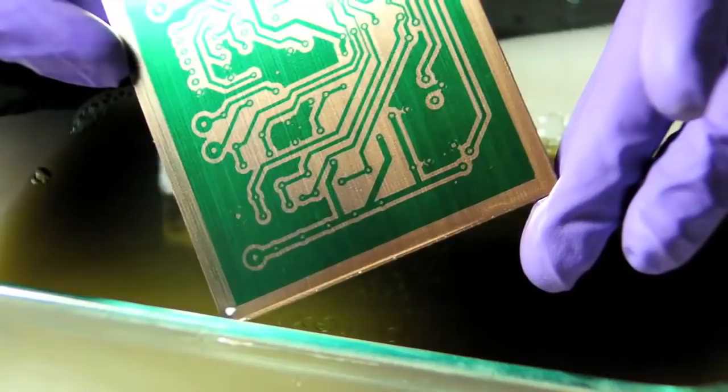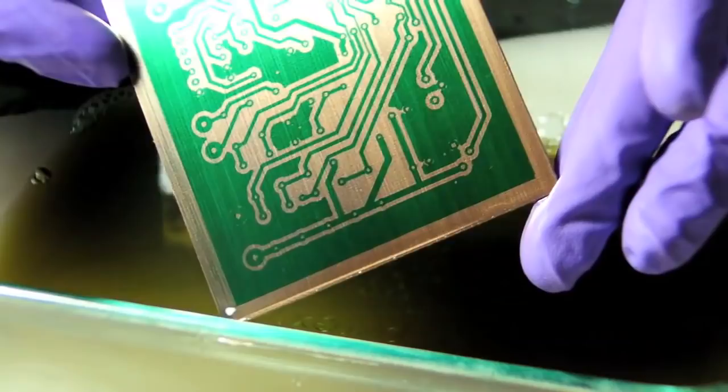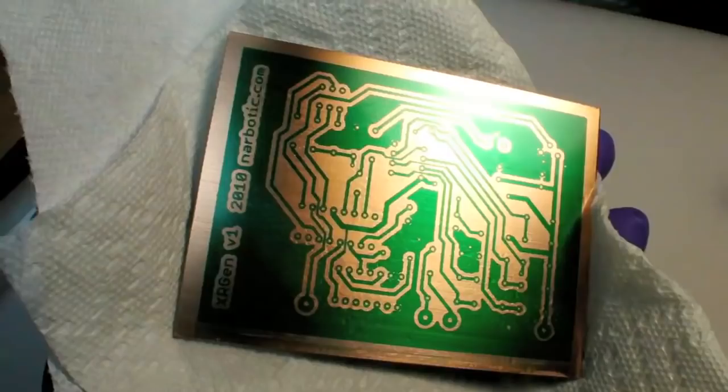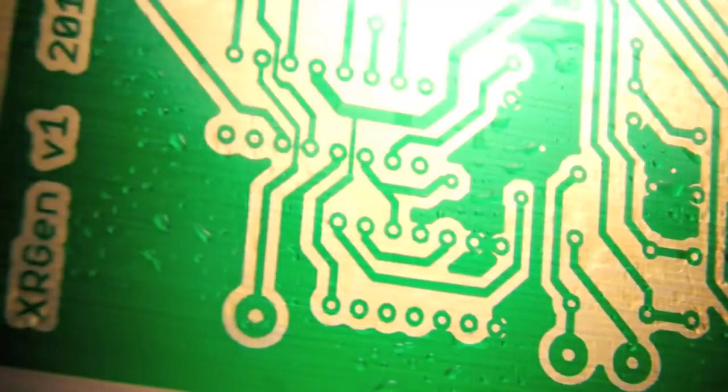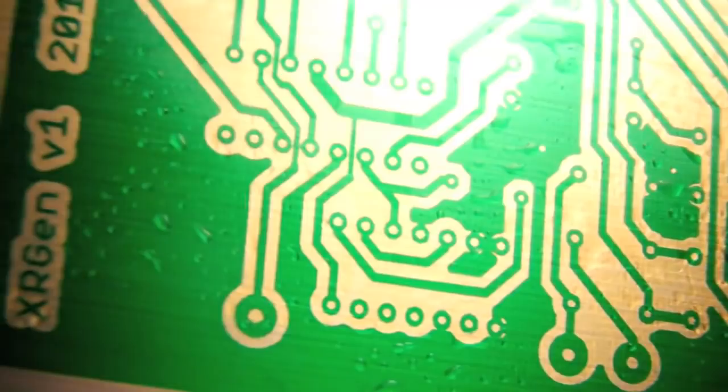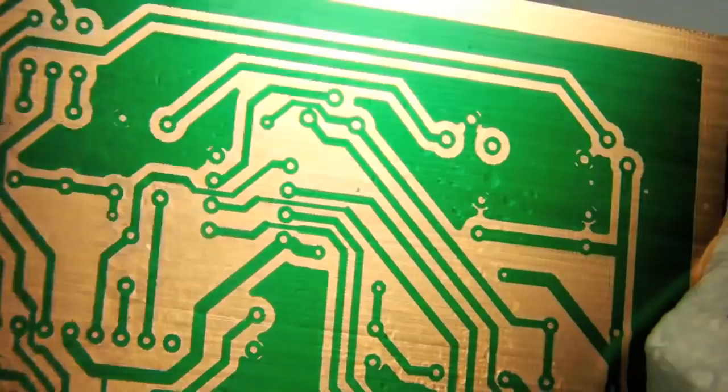Once all of the exposed areas are all bright and shiny, totally free of resist, we can pull the board out and give it a quick rinse in cold water. At this point, you could scrape away any unwanted resist, or fill in any holes that you spot with a fine point permanent marker. If everything looks good, then it's time to move on to the etching.